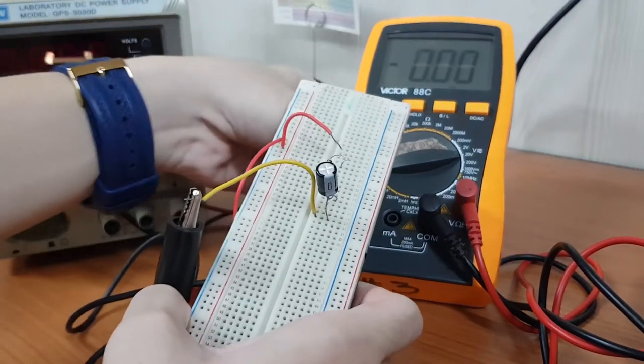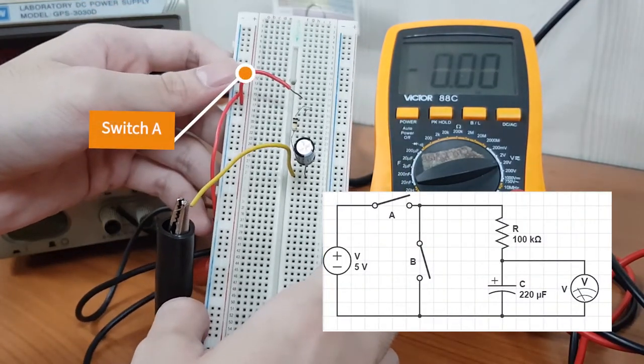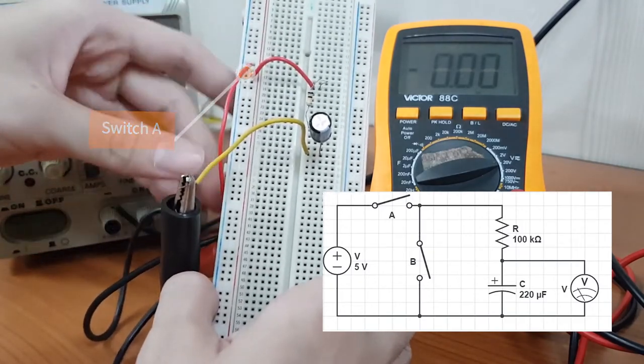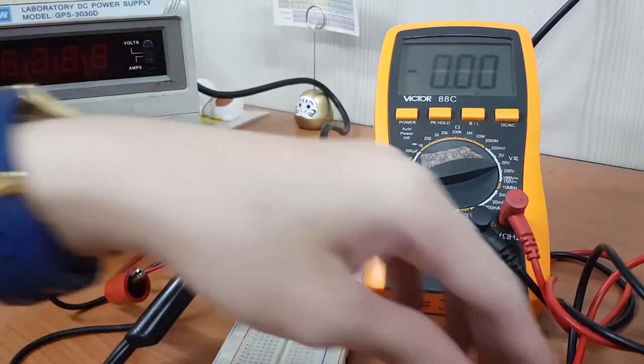For the charging mode, we will connect switch A. So we will turn on this switch A by connecting it to the top of our resistor R as shown in the circuit diagram.